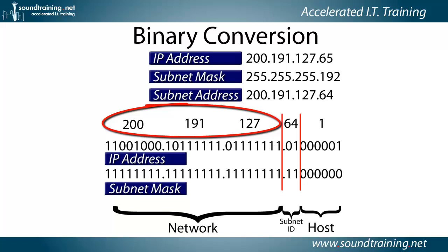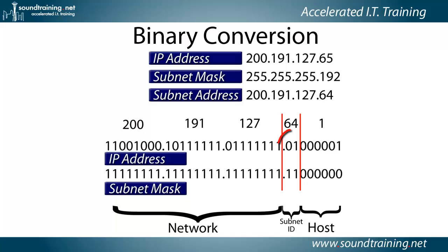Look at the value of the bits turned on between the two lines in the IP address. The 128-bit is not turned on, but the 64-bit is. Therefore, the value of the bits between the two lines is 64. And that is our new entity called a subnet ID.